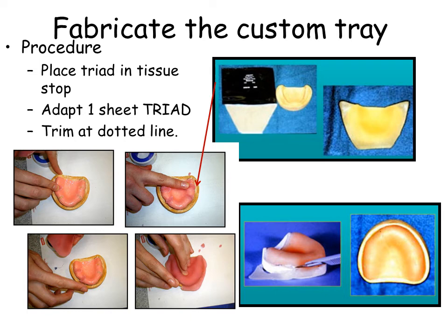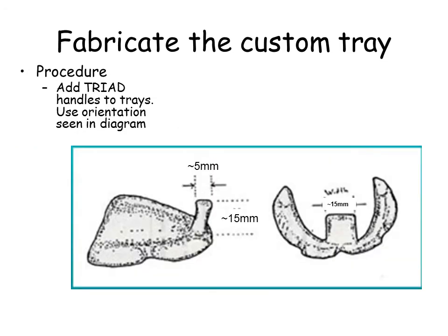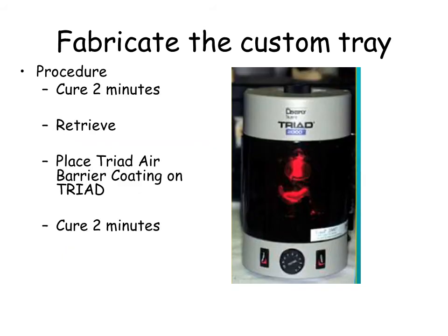Place triad in the area of tissue stops. Adapt one sheet of triad as seen in the diagram, then trim the triad at the dotted line. Add handles as noted in the diagram. Cure the triad as noted in the slide.